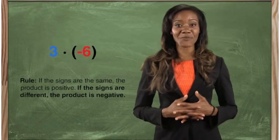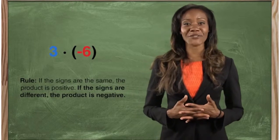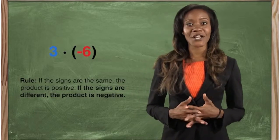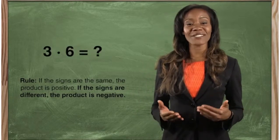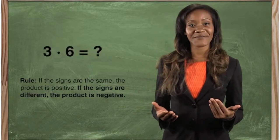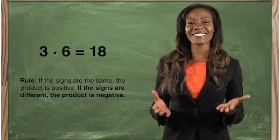Now, let's multiply their absolute values. 3 times 6 is 18.